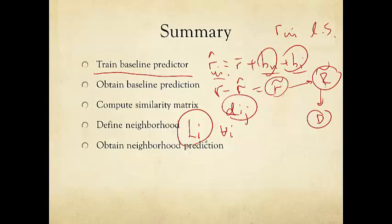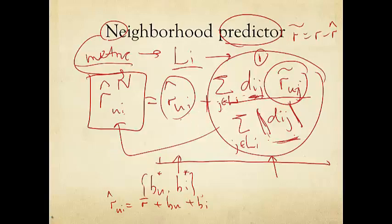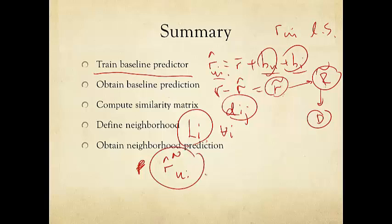Once we have computed this Dij, we can define a neighborhood Li for each movie i, consisting of a bunch of movies very similar or very dissimilar from movie i. And once that's done, we can now plug everything into the R hat n ui formula, which we just shown on the previous page. Because we have now all the ingredients, including the baseline, the D's, and the R tildes. And that will give us the final predictor, which we can collect all the Ui entries into a particular table or matrix R hat sub n for neighborhood method.